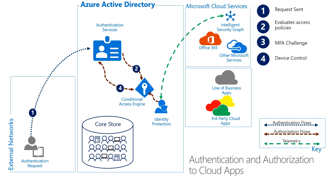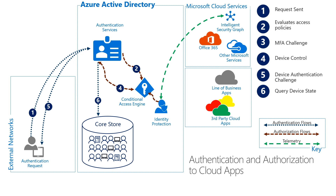Since we have device controls, the authentication service needs to know what the device is. When Ross first enrolled his device using Intune, the device generated key material to authenticate itself and the core store has a device object that represents Ross's phone. What happens here is that the authentication service sends a challenge to authenticate the device. This challenge may be different based on the platform or client type. In this case, Ross is a good employee and he also has the Authenticator app. Outlook will interact with the Authenticator app to authenticate. We will cover how this works in a separate video.